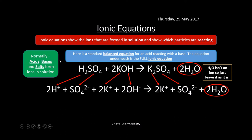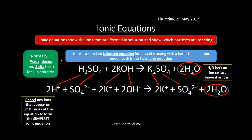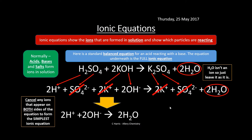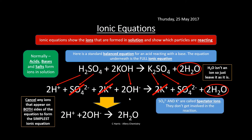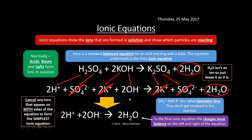Next, cancel any ions that appear on both sides to simplify to the net ionic equation. What remains is 2H⁺ + 2OH⁻ → 2H₂O, or simply H⁺ + OH⁻ → H₂O. The SO₄²⁻ and K⁺ are spectator ions — they don't participate in the reaction. In the final ionic equation, charges must balance: on the left we have 2+ and 2−, giving neutral; on the right, water is also neutral.